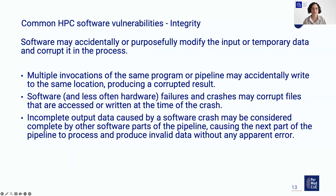For integrity, the software might accidentally or even purposely modify input or temporary data, always causing corruption. A typical example is when you have multiple invocations of the same program or pipeline — they may accidentally write to the same location and produce a corrupted result. If the software or hardware fails and crashes while reading or writing files, this might also corrupt those files. A crash might also leave incomplete output data, and if it is not clearly visible that a crash occurred, follow-up steps might not realize the output data is incomplete.